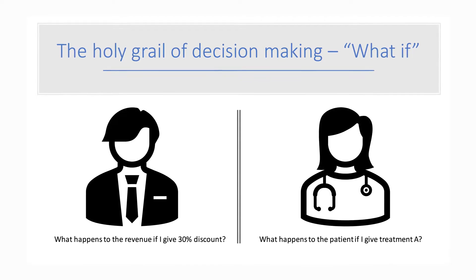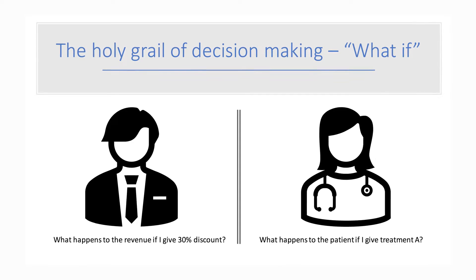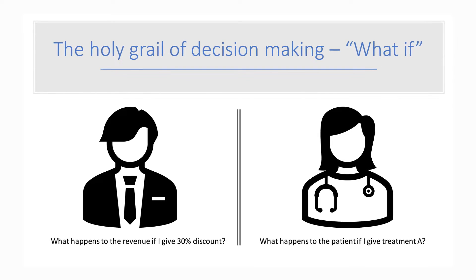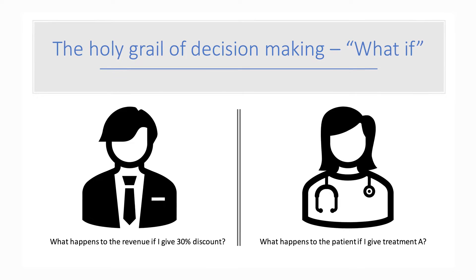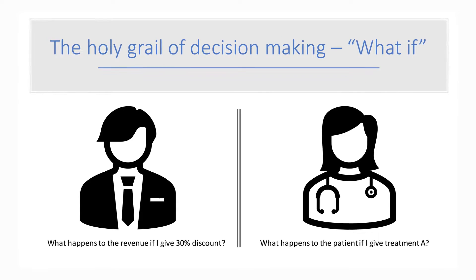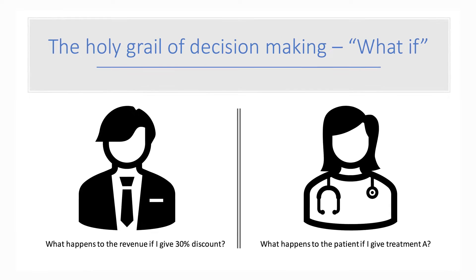The holy grail of decision optimization is the ability to answer what-if questions. Imagine if you are a medical doctor — if you know what happens if you give a certain treatment, how to choose the treatment will be very easy. And if you are a sales manager and you know what happens to the revenue if you give certain promotions, the decision will also be very easy.